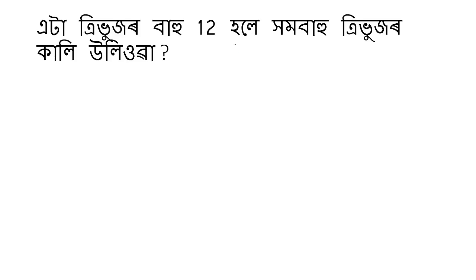This is 12 centimeters. The area formula for an equilateral triangle is root 3 by 4 times a squared. Here a means 12 centimeters.